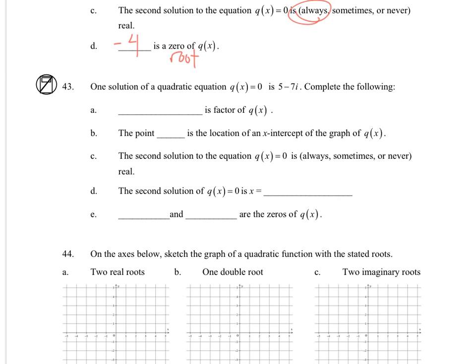Similarly for 43, so the factor is going to be x - (5 - 7i). The point is an x-intercept. Well, if the solution is imaginary, there is no x-intercept. The second solution is never going to be real. The second solution is the conjugate, the complex conjugate. So that means 5 - 7i and 5 + 7i are the 0s.